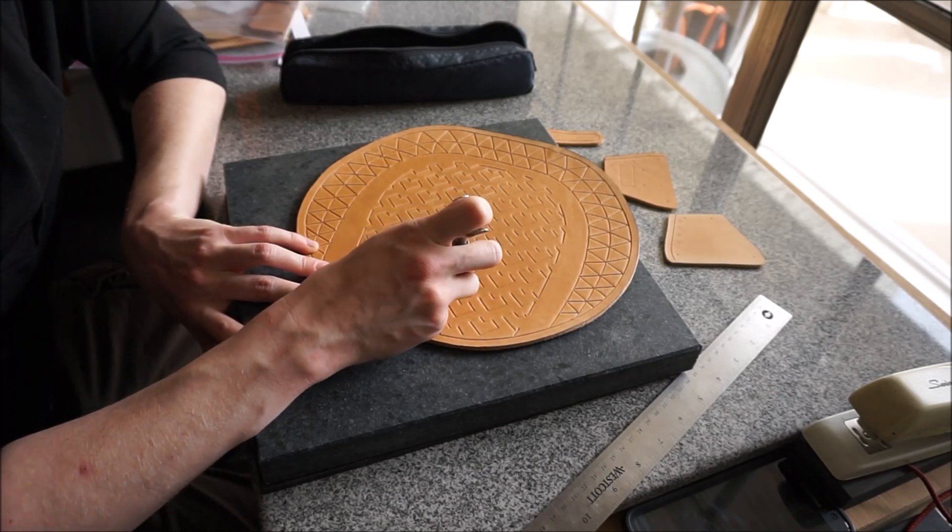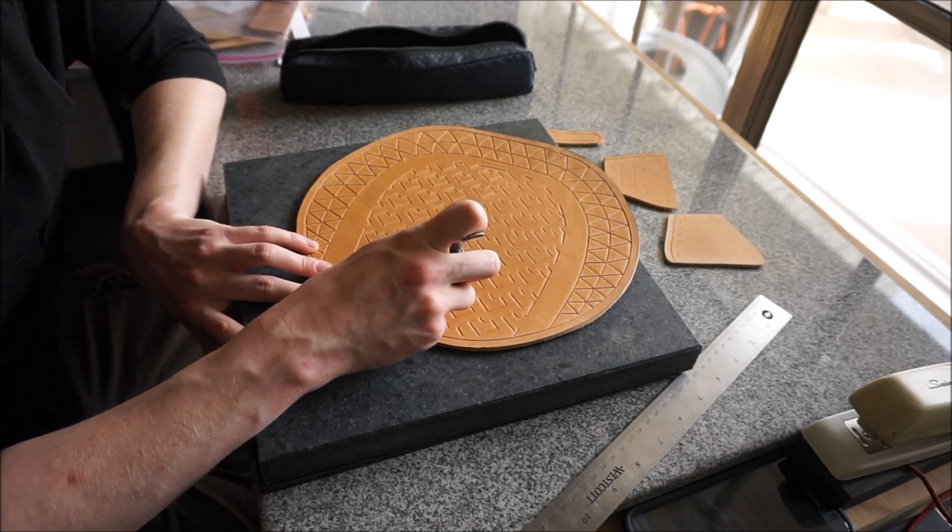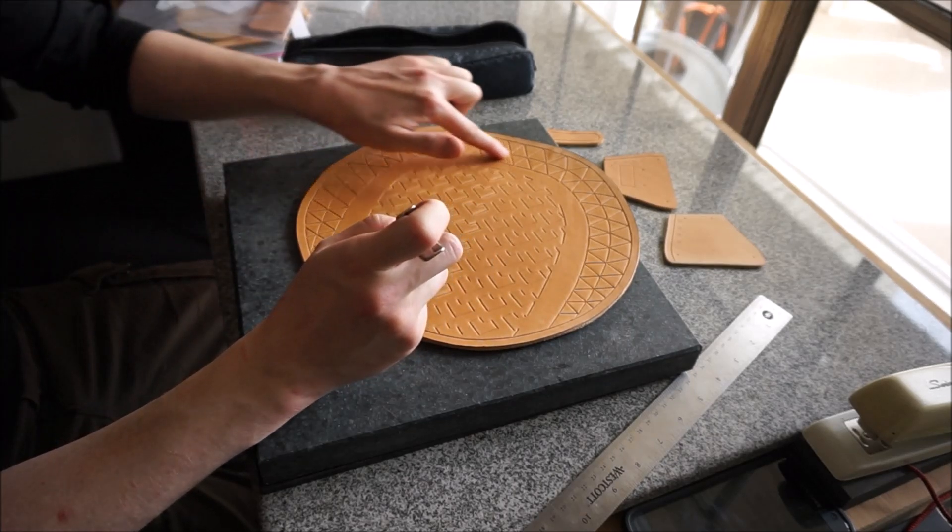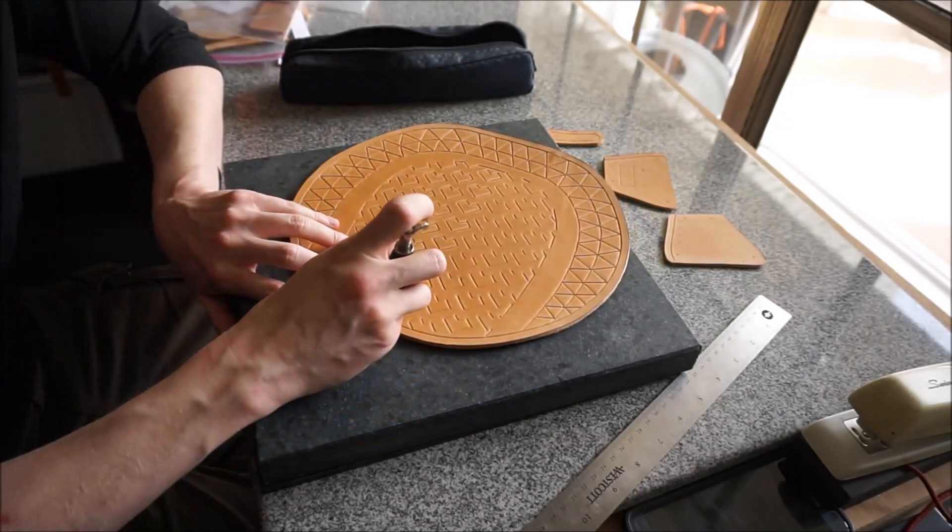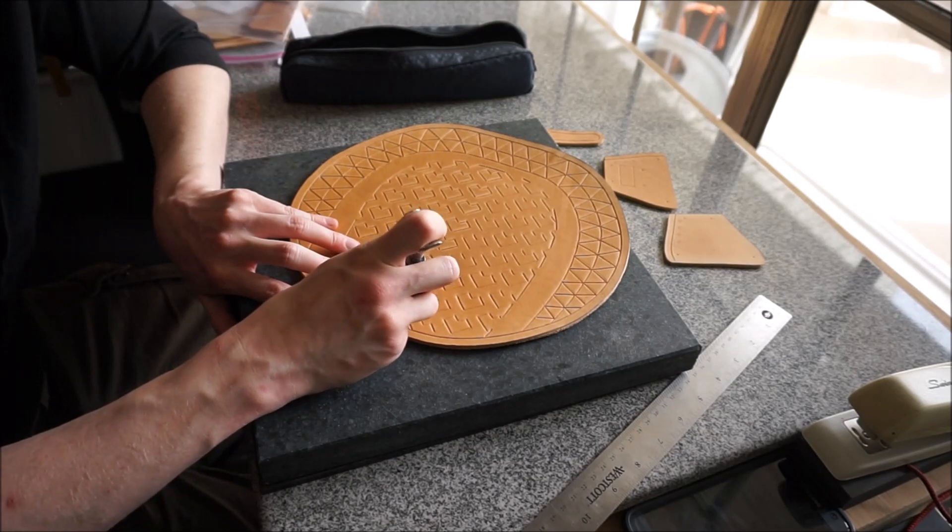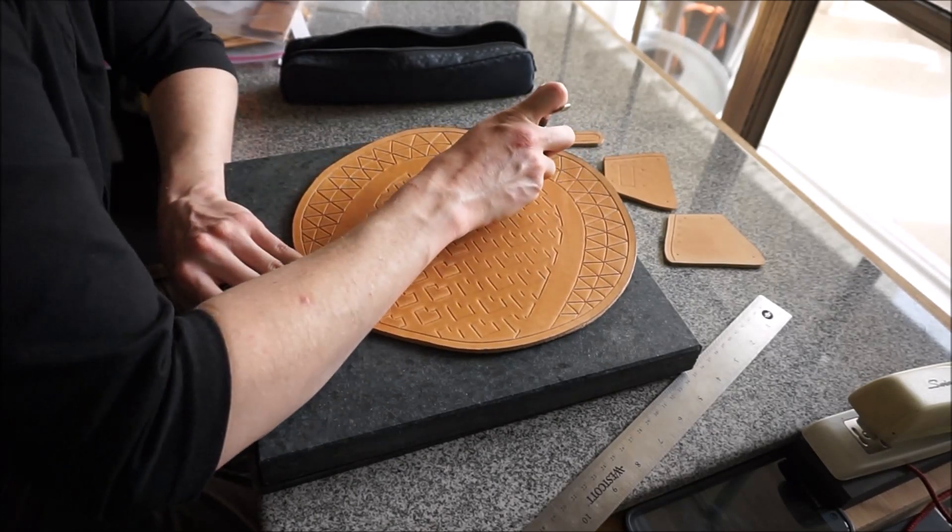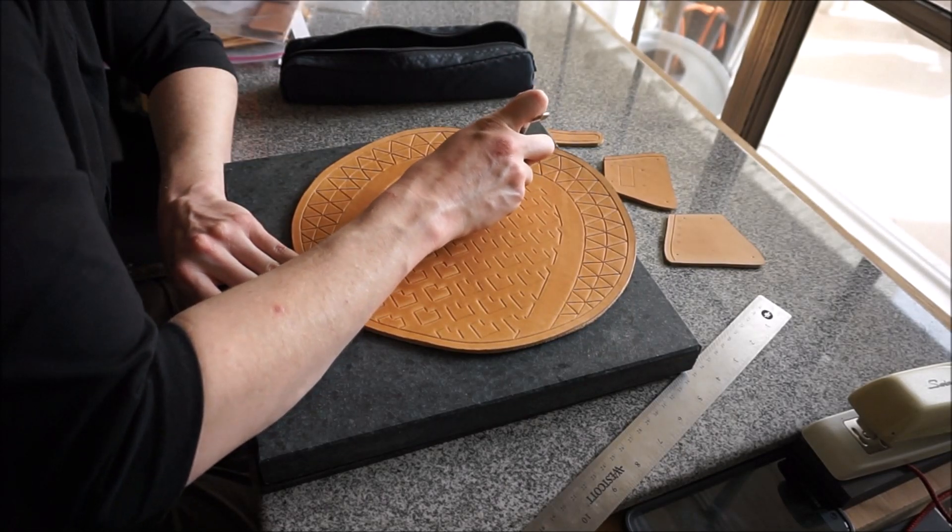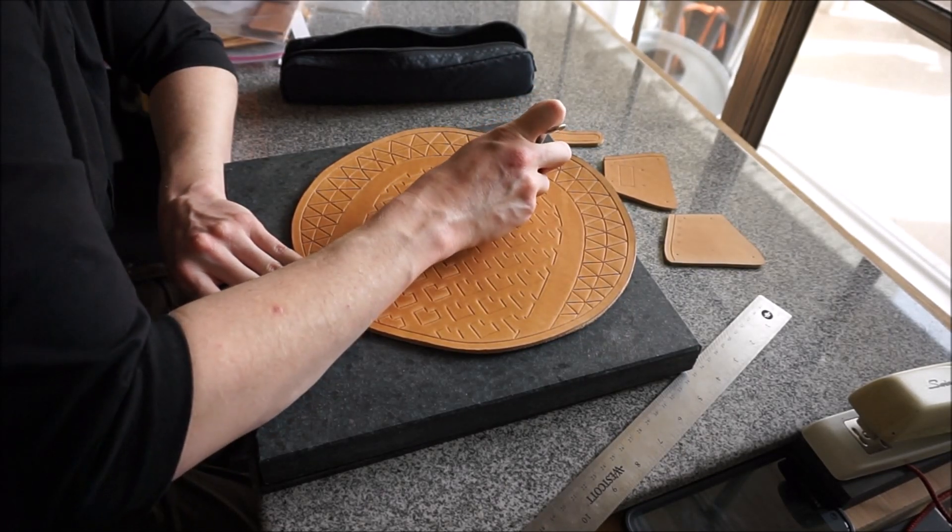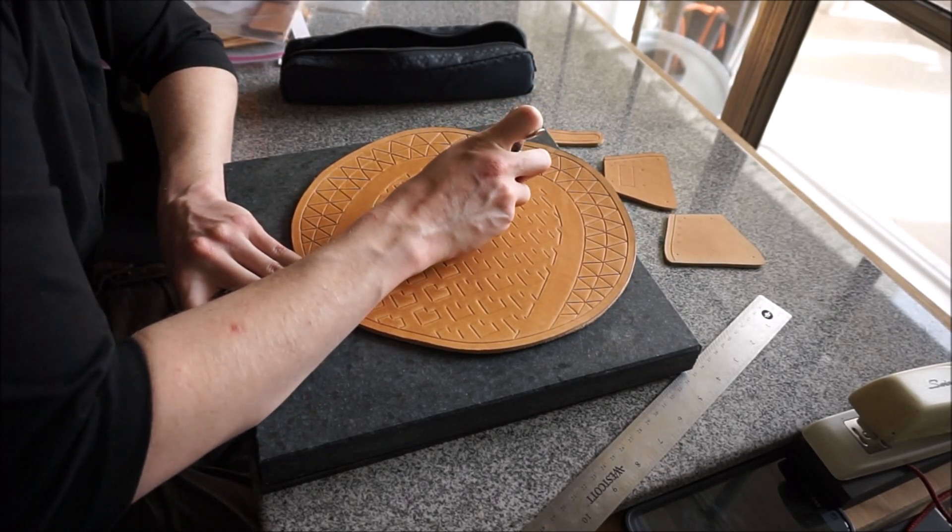When you've got things that are mostly straightaways, such as just like going around that line, that will go quite quickly because you can use a large stamp and you can work up a full head of steam. But ones, designs that are much more detailed, you're going to be stopping and starting a lot more.